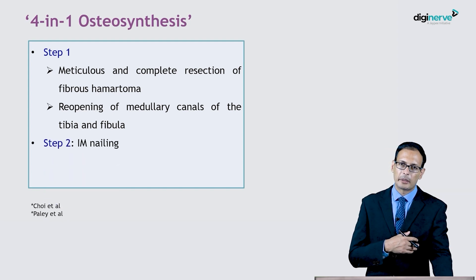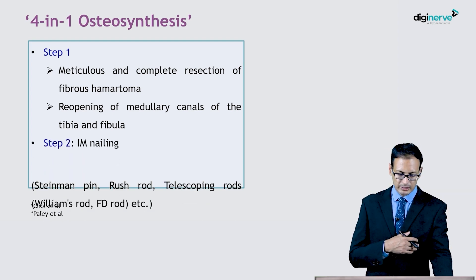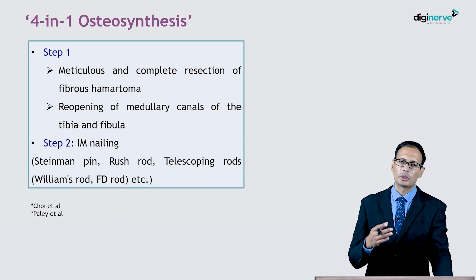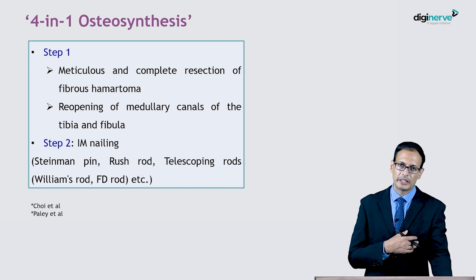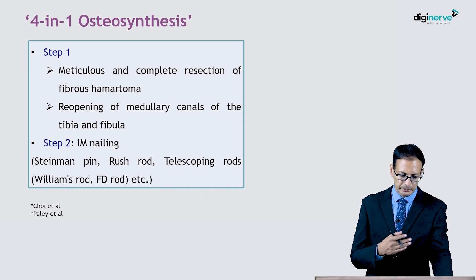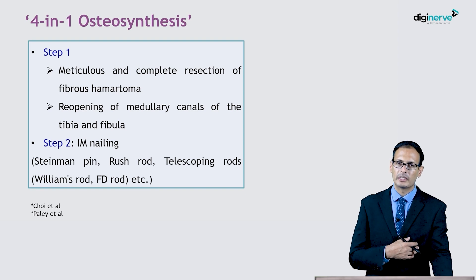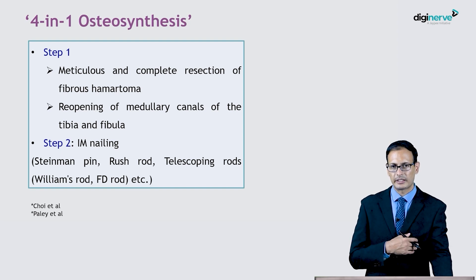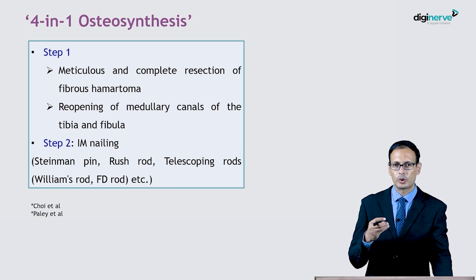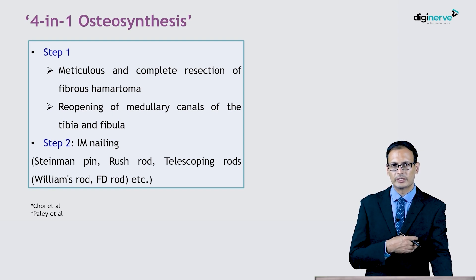Step 2 includes intramedullary nailing. Various forms of intramedullary devices can be used, including the Steinmann pin, Rush rod, telescoping rods, Williams rod, or FD rods. In the chapter on osteogenesis imperfecta, we have described the principles of telescoping or growing rods, and we recommend students to go through that lecture also.